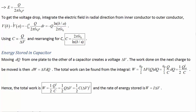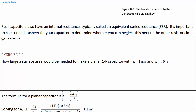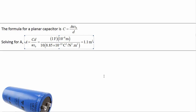Before moving on, let's take a quick exercise: how large of a surface area would you need to make a planar 1-farad capacitor with a separation distance of a nanometer and a dielectric constant of 10? Give that a shot using your parallel plate capacitor equation. The parallel plate capacitor equation is C = kappa epsilon-naught A over D. Solving for area, you find it's 1.1 square meters. That's quite large.